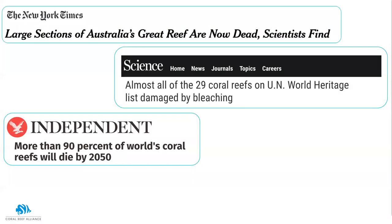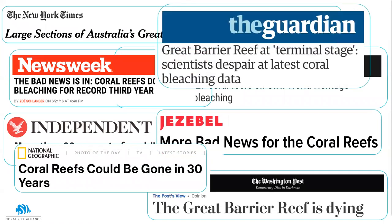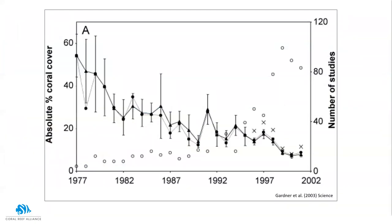Unless you've been living in a cave, you'll have seen news about coral reefs, and most of that news is that they are in trouble. To turn those headlines into data: a graph from 2003 shows that average live coral cover across Caribbean reefs in 1977 was around 50 to 55%, and by 2002 it was around 18%.